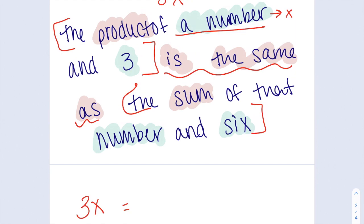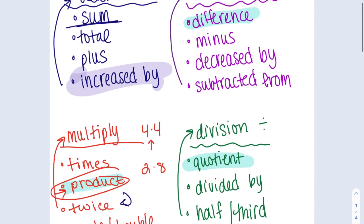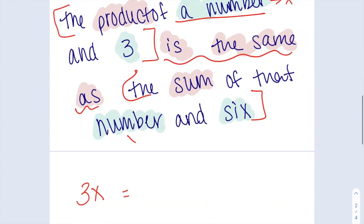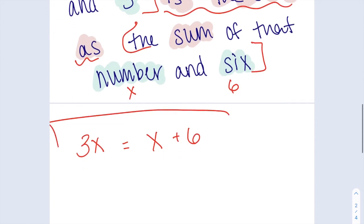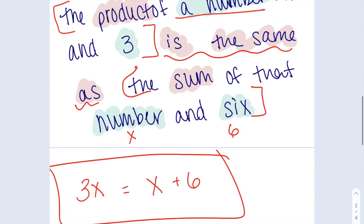So sum, looking at my list, is addition. So if I'm going to do the sum of that number and 6, I'm going to have x plus 6. And then I stop. Now I have 3x equals x plus 6. That is the same as this long sentence up here. The product of a number and 3 is the same as the sum of that number and 6.